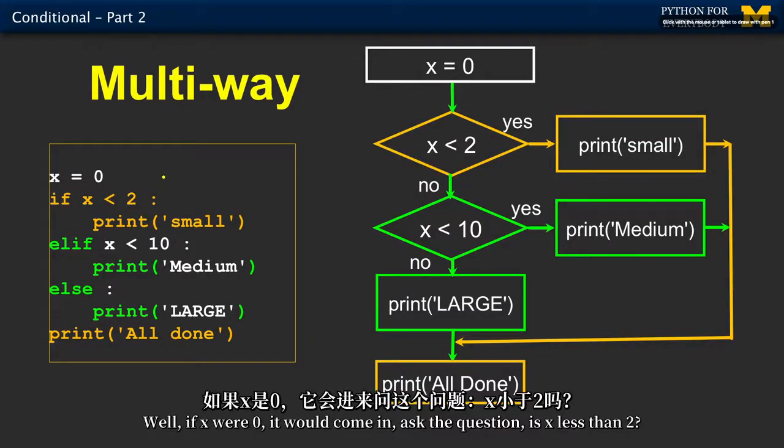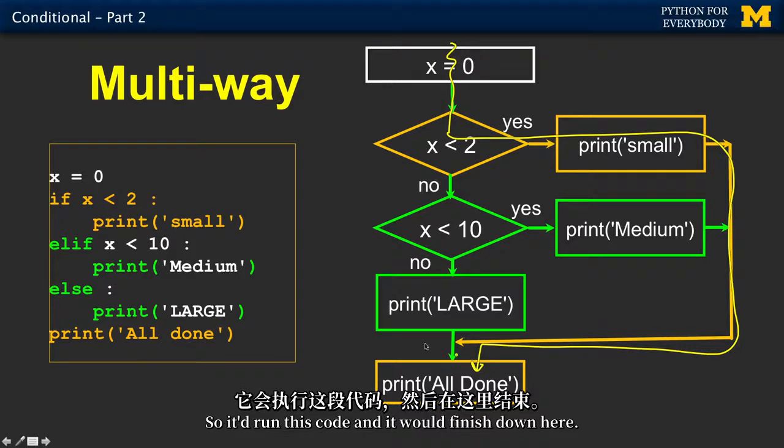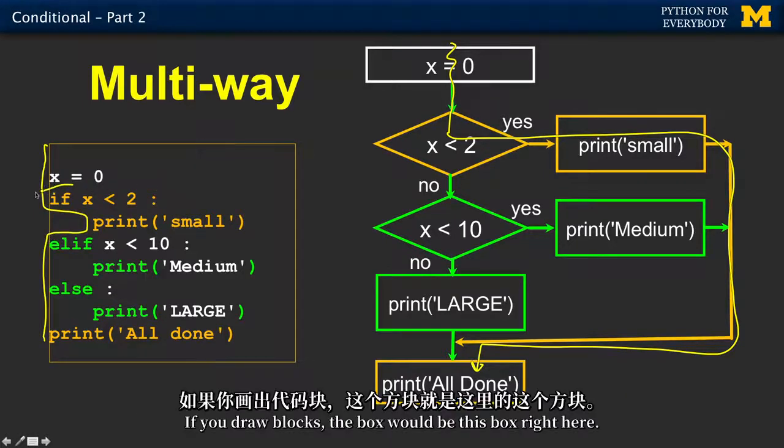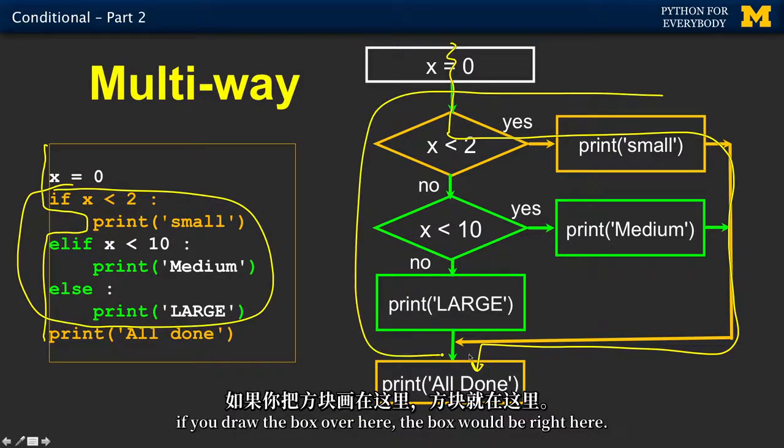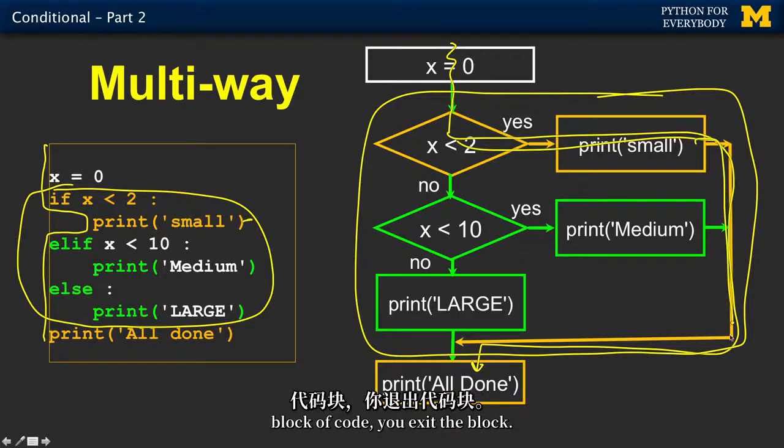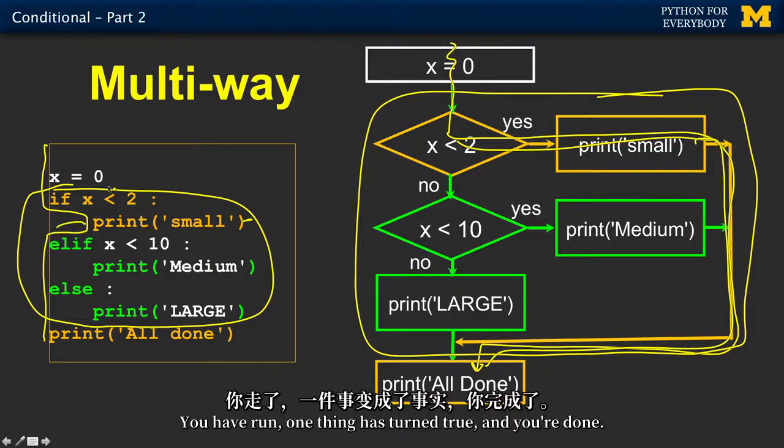What if x were zero? If x were zero, it would come in, ask the question, is x less than two? Yes, it is. So it would run this code and it would finish down here. So it would come over here, true, run, and now skip all the way down. Once you're done with this block of code, you exit the block. You don't come back and look at this question. One thing has turned true and you're done.